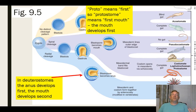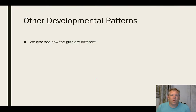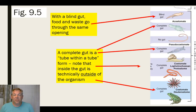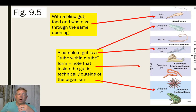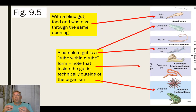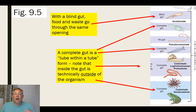Proto means first; protostome means first mouth — the mouth developed first. We can also look at how the guts are different, and that helps us understand evolutionary relationships. We often have blind guts where the food and waste go through the same opening, but more commonly we have complete guts where the food comes in one opening and the waste goes out a different opening.